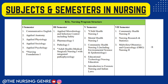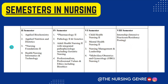Now we have a semester-wise structure in BSc Nursing. We will discuss the subjects. Now in 2022–2023, BSc Nursing has a new education structure. Previously, first year had one exam, second year one exam, third year one exam, and fourth year one exam — four public university exams in four years. But now it is a semester-wise exam, so each year you have two university exams. You have a total of seven semesters, and in the eighth semester, you have an internship.